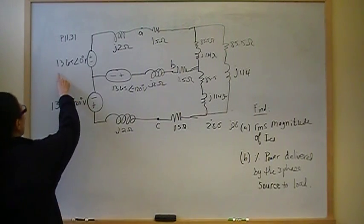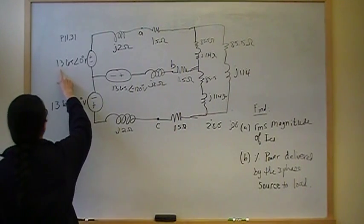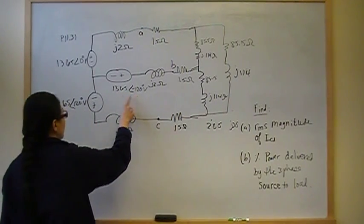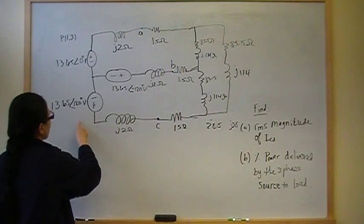You have a balanced three-phase circuit. This is 1365 angle zero volts here. This is 1365 angle minus 120. This is 1365 angle 120 volts.